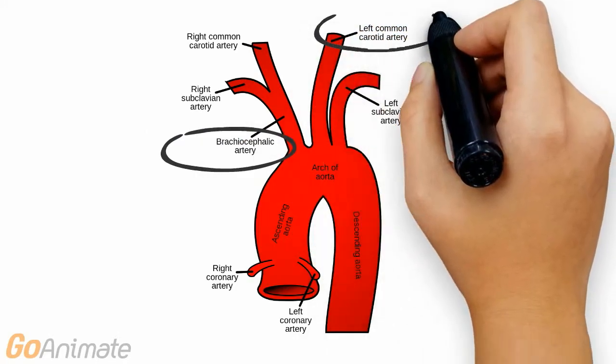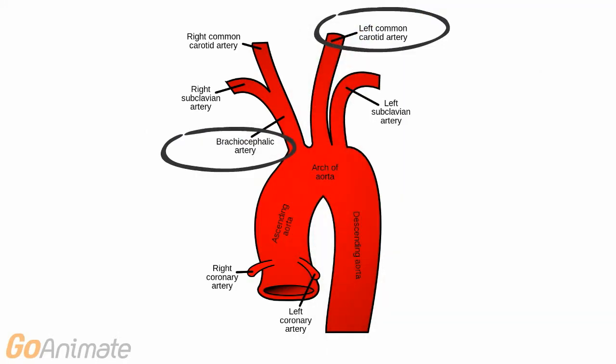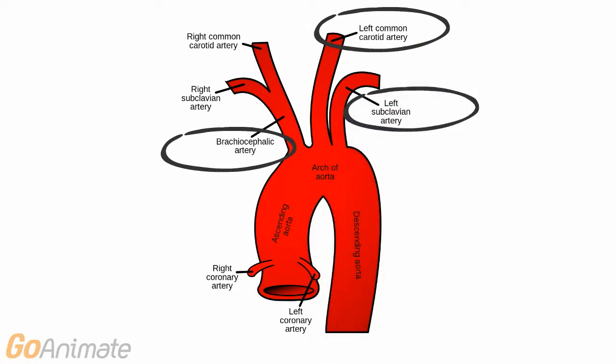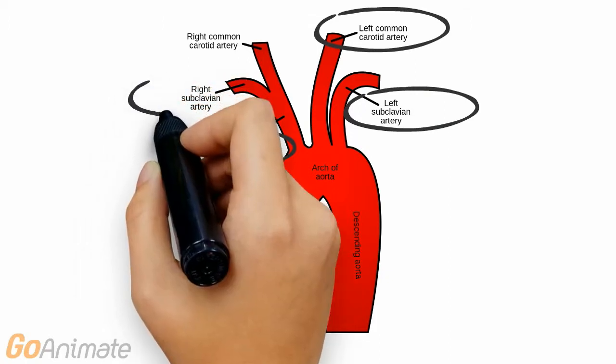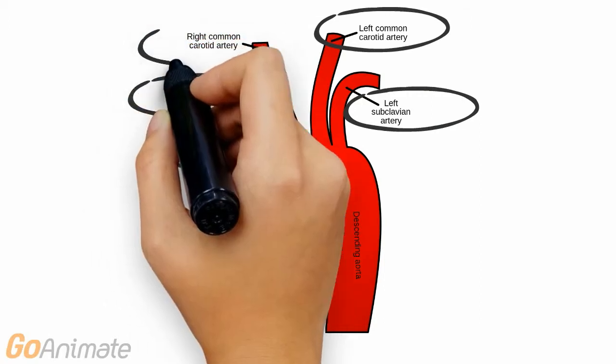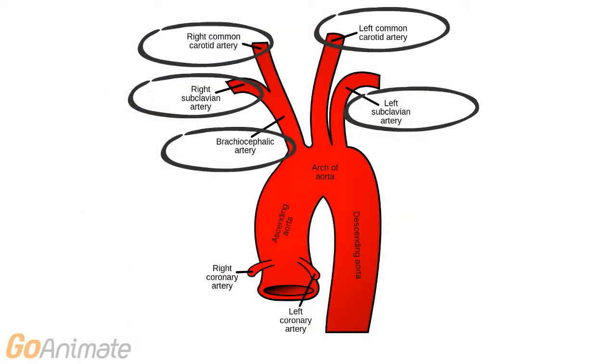The first major branch on the right is the brachiocephalic branch. This branch subdivides into right common carotid and subclavian branches. The left side contains separate branches for the common carotid and subclavian arteries.